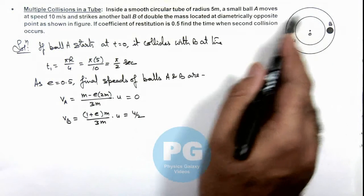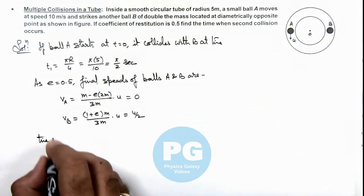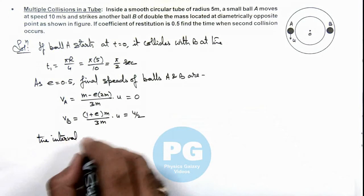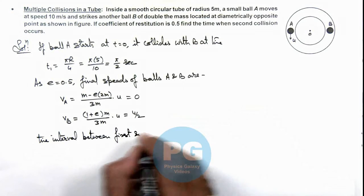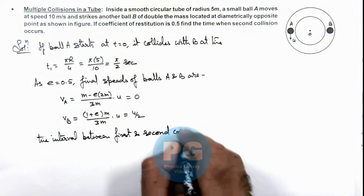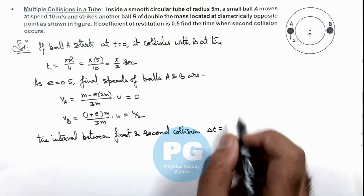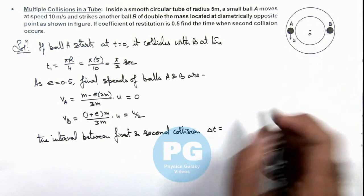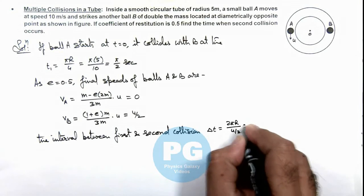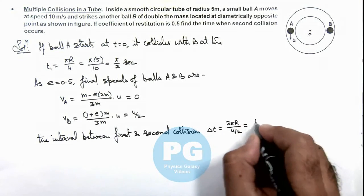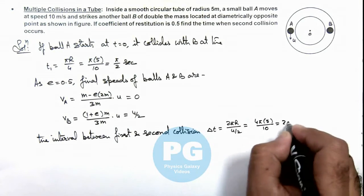Ball B will complete one revolution and then hit ball A. We can now calculate the time interval between first and second collision, delta t. Because ball B will travel one revolution and then hit ball A, this can be written as 2π r divided by u by 2, so this will be 4π × 5 / 10, which is 2π seconds.